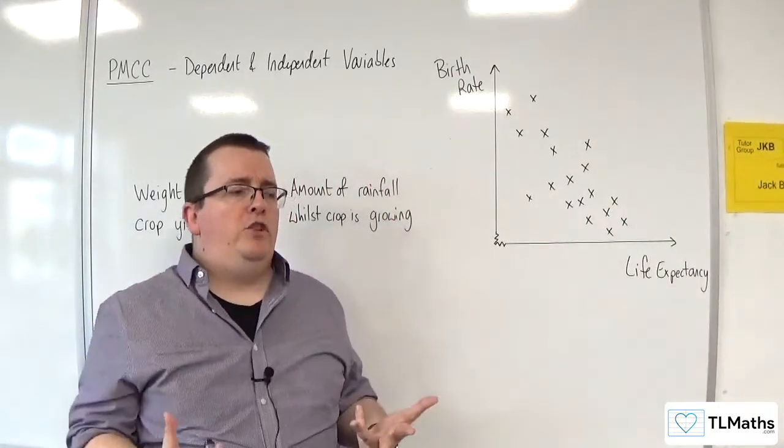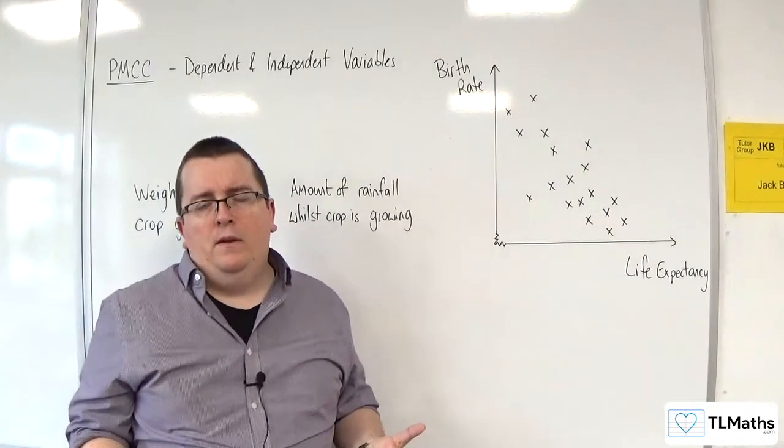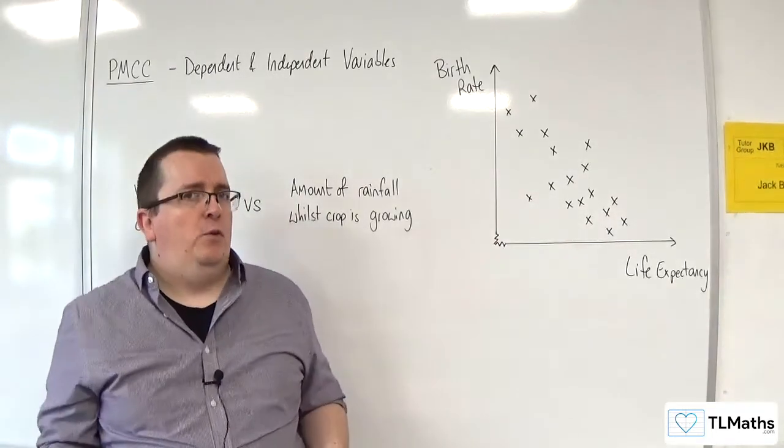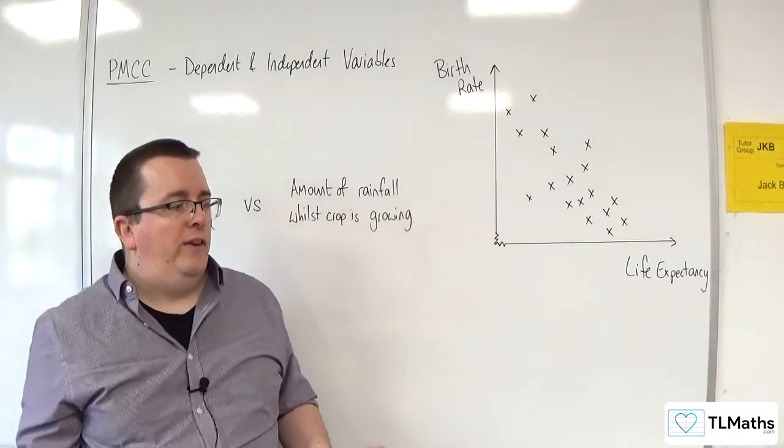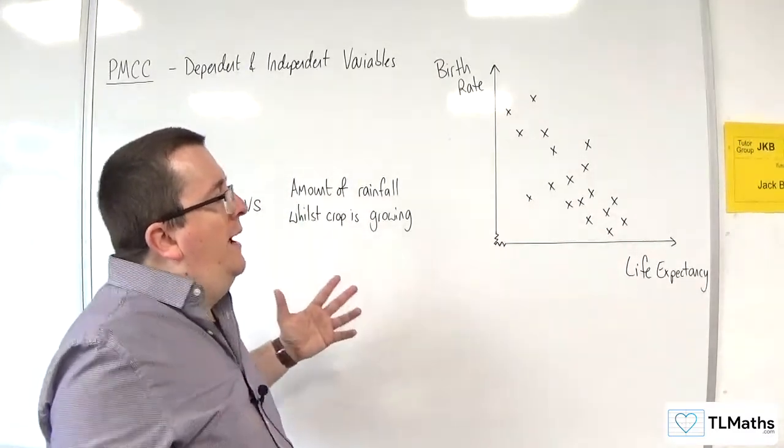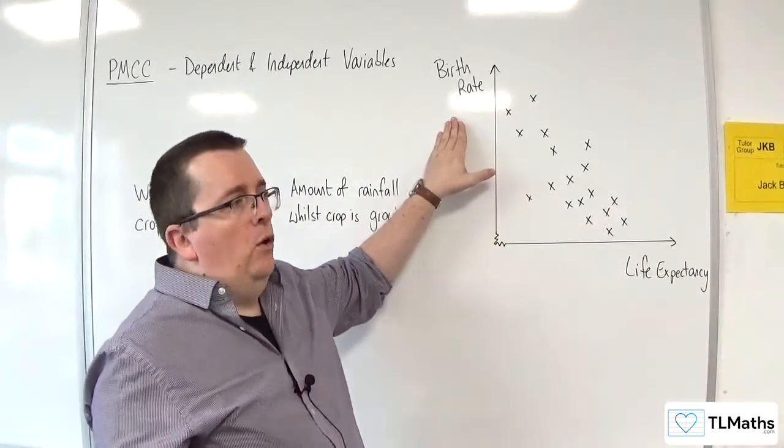Now, the reason why I've chosen this example first is because it's difficult to say. And that's kind of what you've got to deal with in some cases with statistics. It's not always completely clear-cut whether actually one of these is a dependent variable or not.